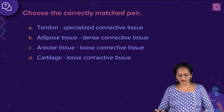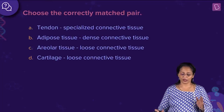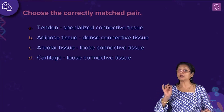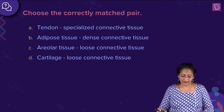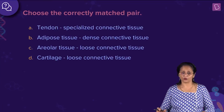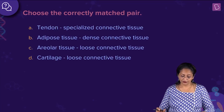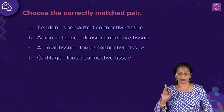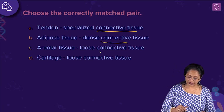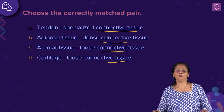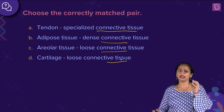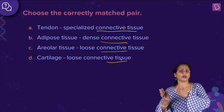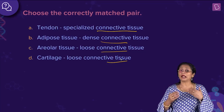Let us do a new question: choose the correctly matched pair. A name is given with a description — check if it matches correctly. The options are: (A) tendon — specialized connective tissue; (B) adipose tissue — dense connective tissue; (C) areola tissue — loose connective tissue; (D) cartilage — loose connective tissue. Connective tissue, as the word says, connects a body part to another body part or an organ to another body part — connecting one tissue to another.